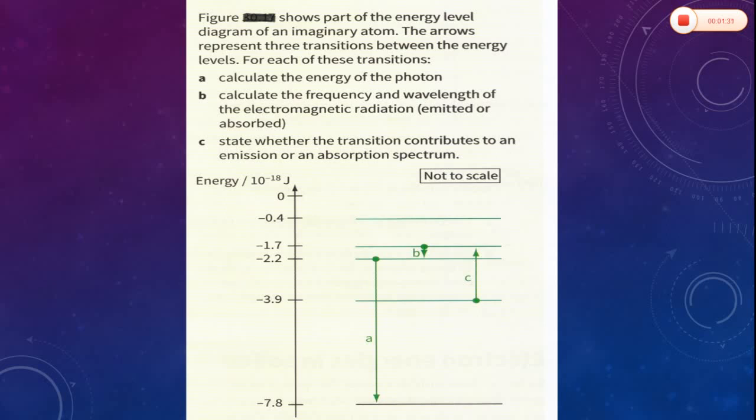So in this case, you will see that in C part, you will answer in such a way like this refers to absorption spectrum, and these A and B will be emission spectrum. And let's see how we calculate the energy of the photon and frequency and wavelengths in each case.